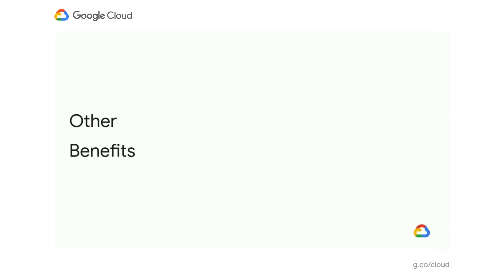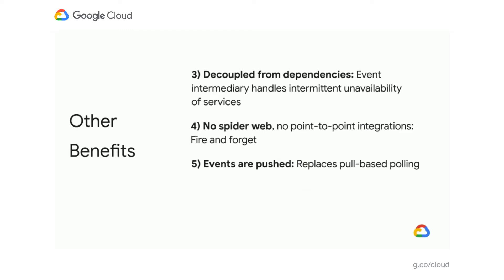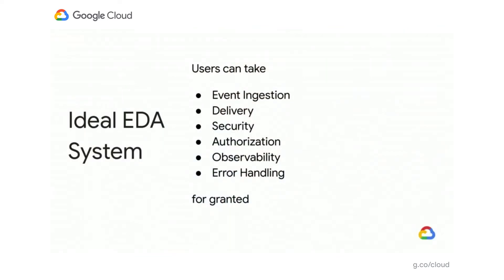Other benefits of event-driven architectures include: we can completely decouple from dependencies. The event intermediary can handle intermittent unavailability of services. There's no more spider web of point-to-point integrations — event producers can just fire events and forget. Events are pushed, replacing pull-based polling. And there's an opportunity to introduce a standardized, uniform communication format between services — for instance, the Cloud Events format. With an ideal event-driven architecture, users no longer have to be experts in distributed computing; they can take event ingestion, delivery, security, authorization, observability, and error handling for granted, and just focus on their application code.